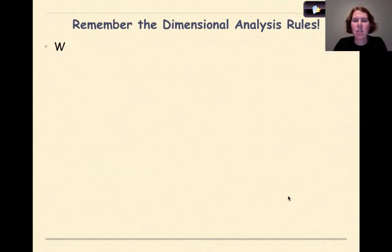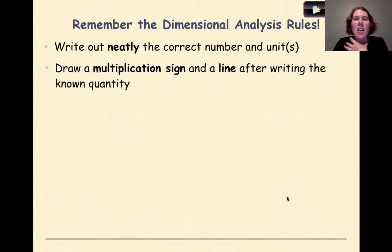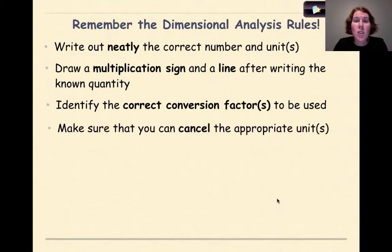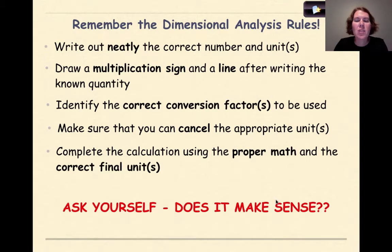One more time, the rules for dimensional analysis. Number one: write everything out neatly and make sure you're writing down the correct number and the correct units. Two: draw a multiplication sign and a line, make sure you're working with the correct conversion factors, and make sure you have the proper units on top and on the bottom. Make sure you can cancel the appropriate units — we're going to have to go in two different directions when working with multiple units today. Finally, complete the calculations using the proper math and correct final units, and ask yourself: does it make sense? If it doesn't, go back, visualize what you're working with, and make sure everything makes sense.